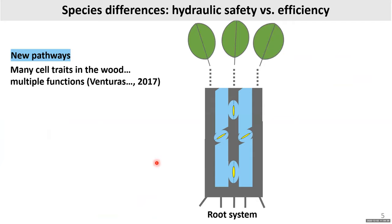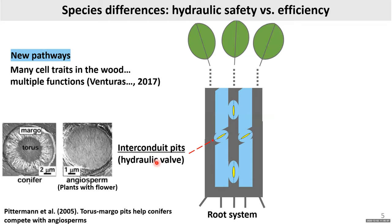There are new pathways, and there is agreement that many cell traits exist in the wood. To truly understand hydraulics, we need to deeply investigate more traits — vessels alone are not enough. The hydraulic architecture is more than just pipes or tubes. A good example are the interconduit pits, which are those micro-valves. Comparing angiosperms — plants with flowers — and conifers, conifer pits are larger, about double the size of angiosperms.